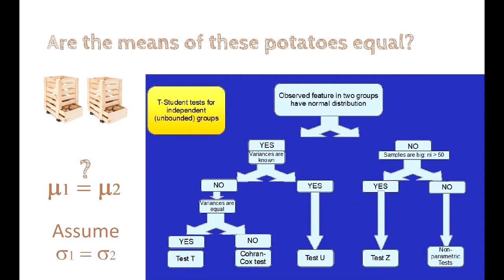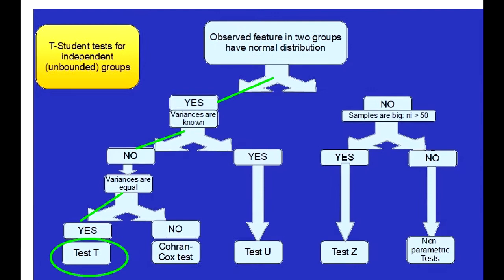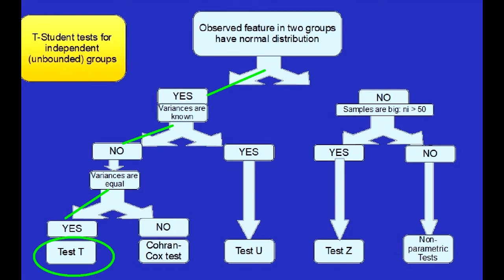We have a T-Student test for independent groups. First question: Do the observed features in two groups have normal distribution? Yes or no? We can assume that in case of potatoes, yes. The next question is, are the variances known? Practically, we can assume we don't know the variances. So we say no. Are the variances equal? Let us assume the variances are equal. They are, probably. So in this case, we are landing at test T.